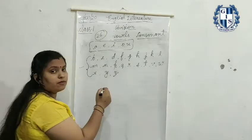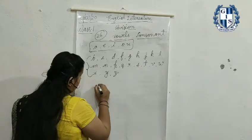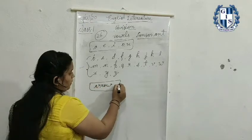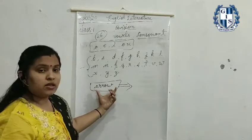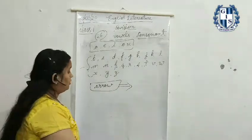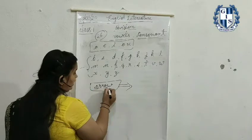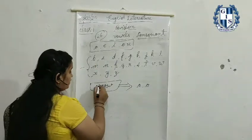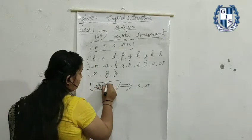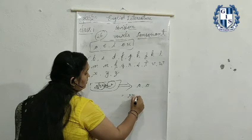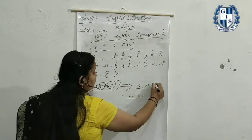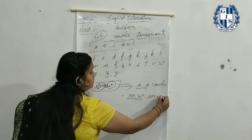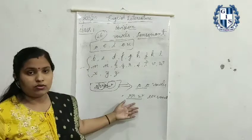Now I am writing some words. Like 'arrow.' In the word 'arrow' there are two vowels: A and O. And the letters that are left are consonants, like double R and W. So A and O are vowels, and R and W are consonants.